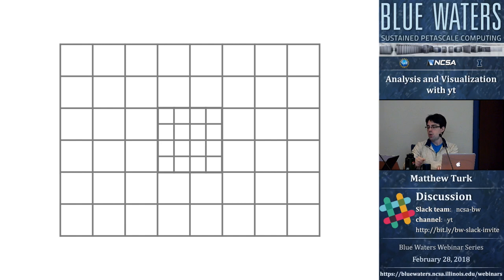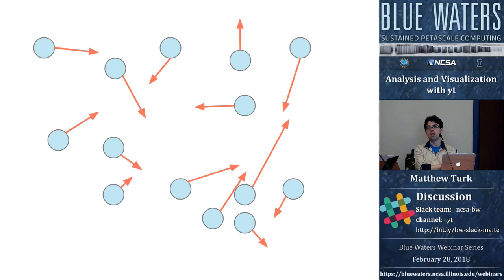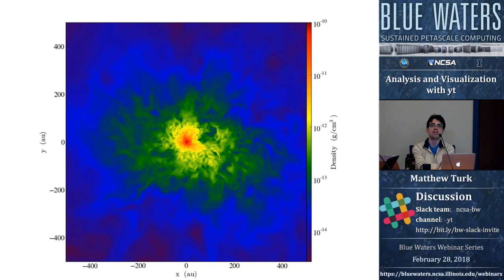An alternate method of representing this would be through particles, where you have a number of different attributes associated with each particle. In some cases these particles represent fixed points; in others they represent smeared-out points, depending on how it's represented.